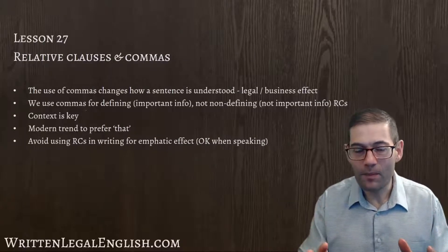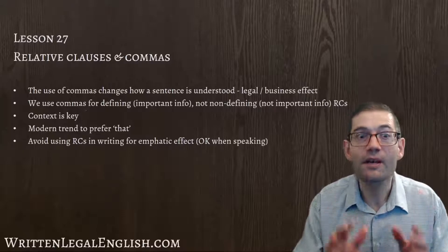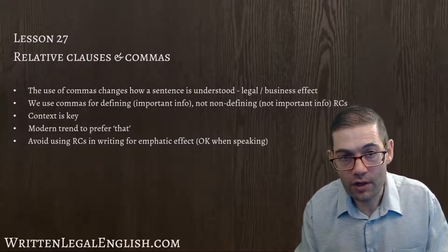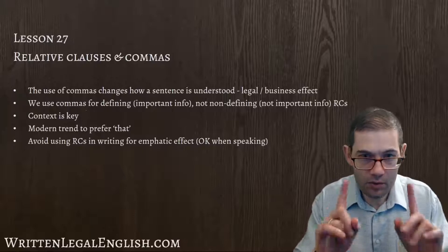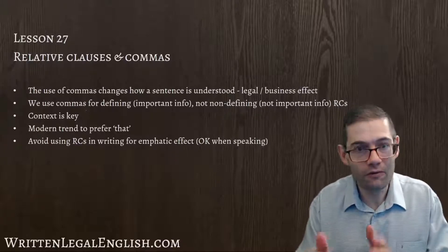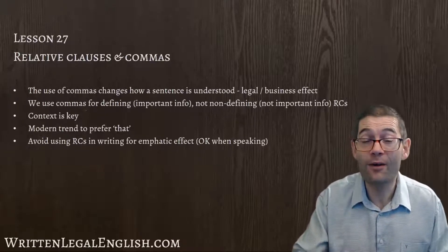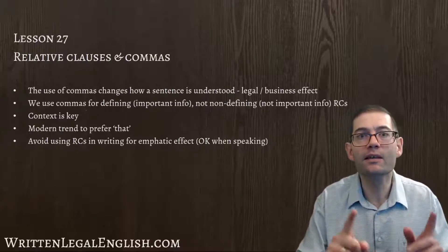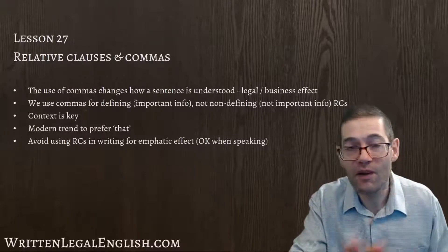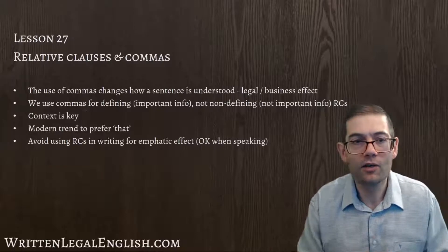The main thing to remember is that when you're writing a sentence with a relative clause, your use of commas may change how that sentence is understood. This has a clear business English and legal English effect — if you mean to say one thing but your comma use leads the reader to understand it differently, that's your fault. There are two very well-known cases based on this: the million dollar comma case and the ten million dollar comma case. Go to Google and check those out — very interesting, all about how a comma was either used or not used and how the text could be interpreted.